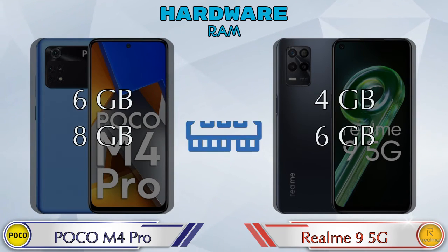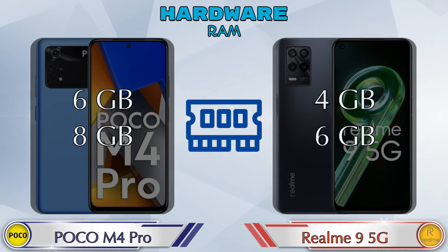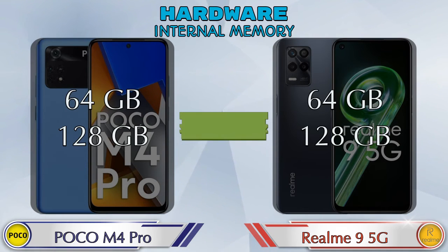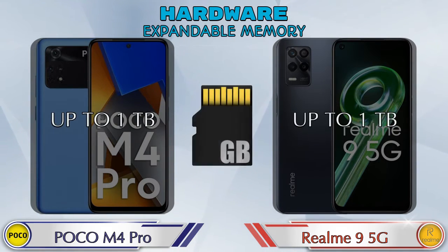Talking about RAM, Poco M4 Pro has two options: 6GB and 8GB RAM. Realme 9 5G has two options: 4GB and 6GB RAM. Both phones have two storage options available — 64GB and 128GB — and expandable memory up to 1TB.